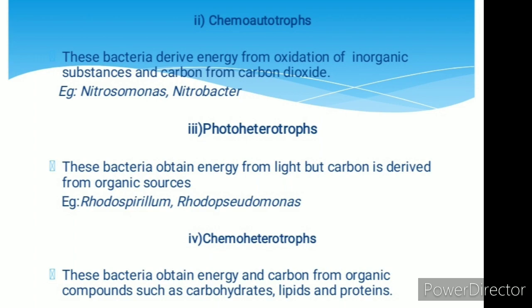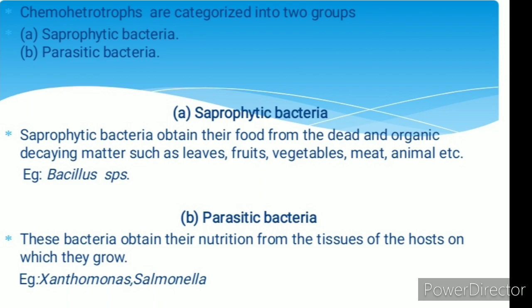Chemoheterotrophs: these bacteria obtain energy and carbon from organic compounds such as carbohydrates, lipids, and proteins. These are further categorized into two groups. Saprophytes are free-living microorganisms that feed on organic detritus from dead organisms, obtaining food from dead and decaying matter such as leaves, fruits, vegetables, and meat. Example: Bacillus species.